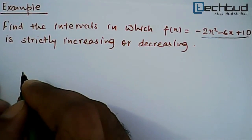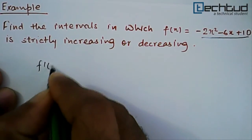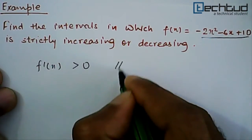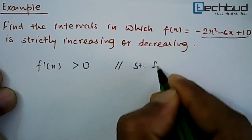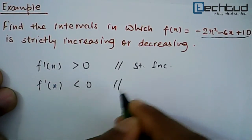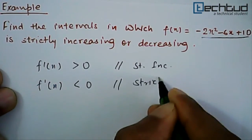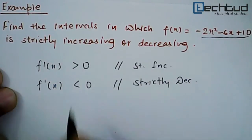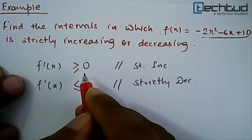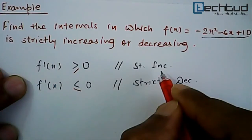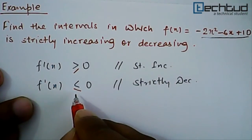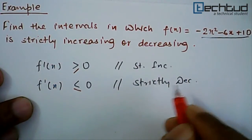As we know, for a function, if f dash of x is greater than 0, then we say that it is strictly increasing. Or if f dash of x is less than 0, then we say it is strictly decreasing. If we also have equal to sign — greater than or equal to 0 — then we say that this is increasing, not strictly increasing. Similarly, if we have equal to sign, we say it is decreasing, not strictly decreasing.